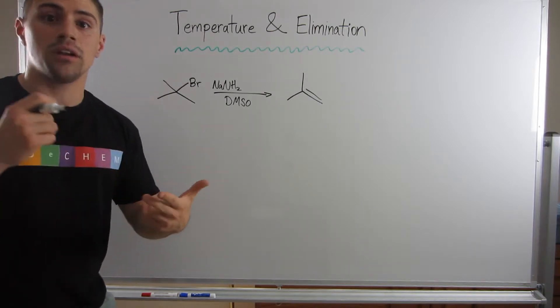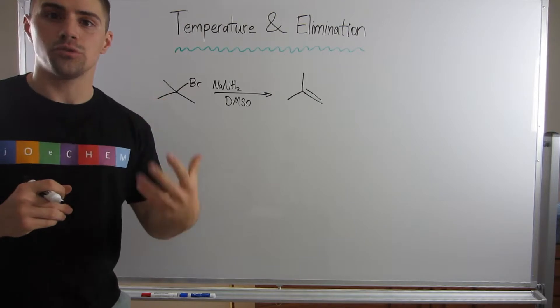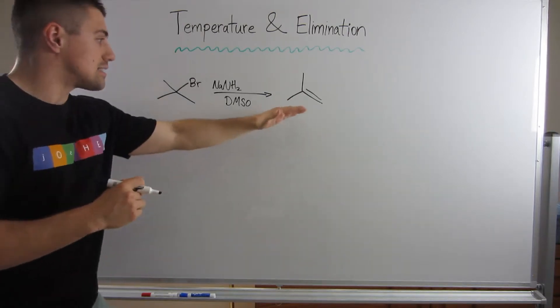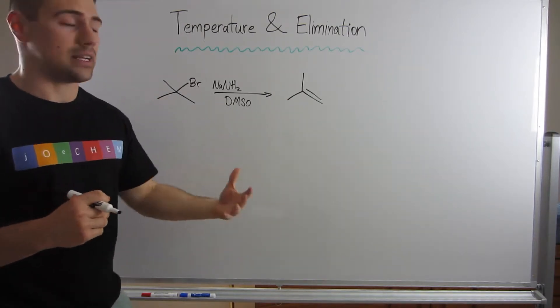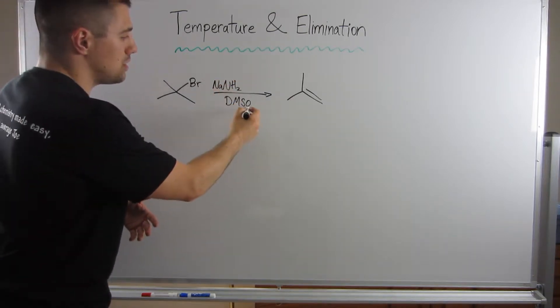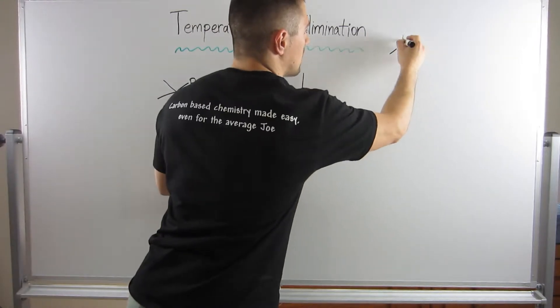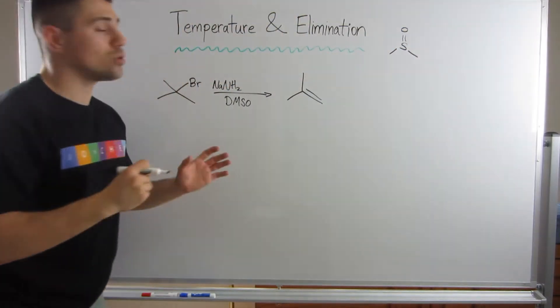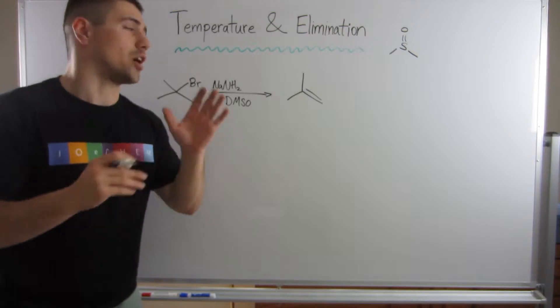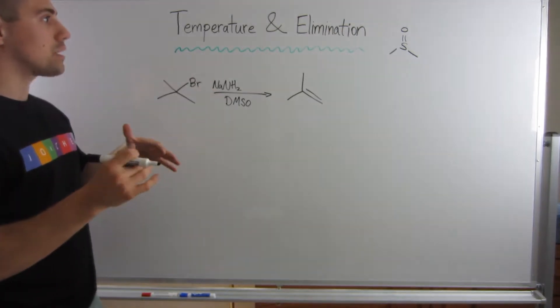We know how to decide between SN1, SN2, E2, E1. Now that we have all those tools in our toolbox, let's dissect what's going on in this example reaction. Right here I see my solvent DMSO, dimethyl sulfoxide. We know that is polar aprotic.